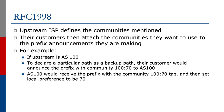As a simple example, if your upstream is AS 100 and you want to declare a particular path as a backup path, your customer would create a community 100:70 and send that to AS 100 attached to a particular prefix. AS 100 receives the prefix with that community 100:70 tagged and then sets the local preference on that particular announcement to 70.